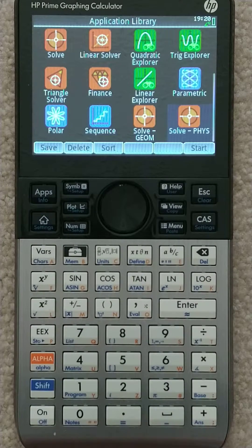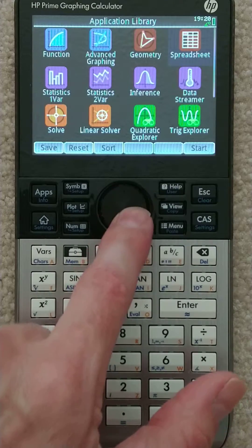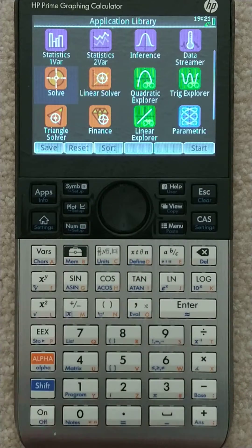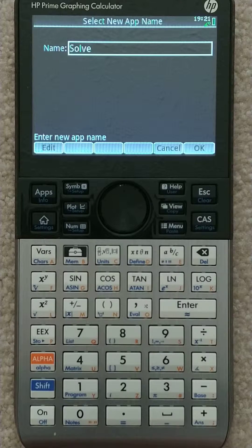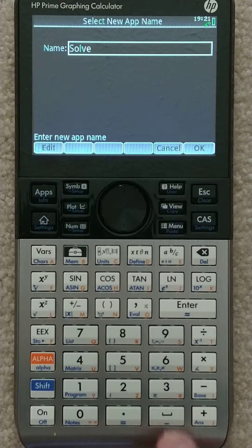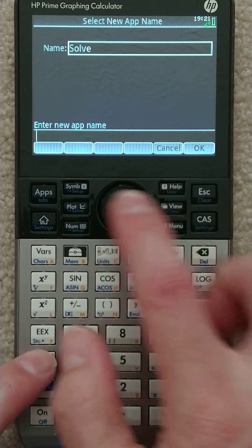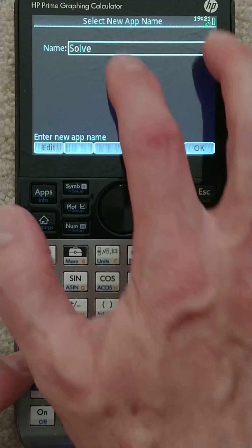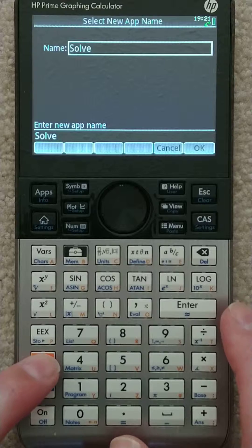So start out by going into the applications library and select... Let's see. Where's my cursor? Oh, there it is. Okay, highlight the solve, and I'm going to hit save, which will create a copy of the solver. So I'm not altering the original version, and then I can give it any name I want.